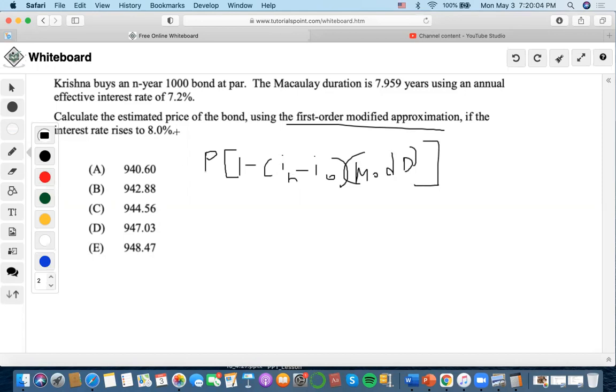Now it says that Krishna buys it at a thousand bond at par, so we assume that this is the initial price that we have to put in, 1 minus interest rate. And it says the interest rate rises, so this is going to be the new interest rate minus the old interest rate.